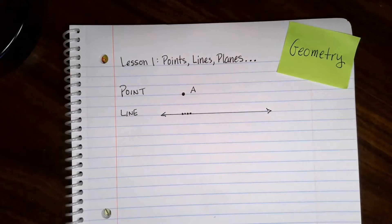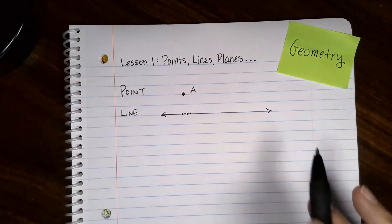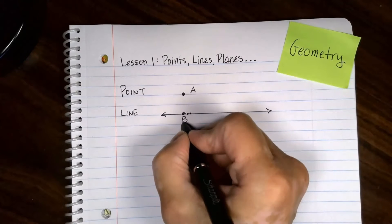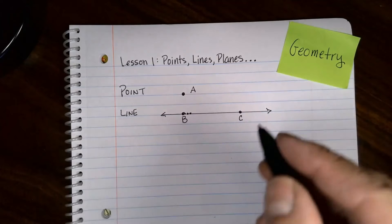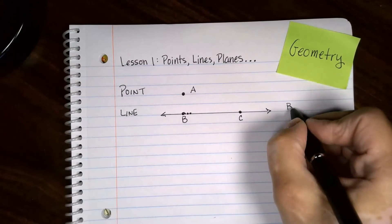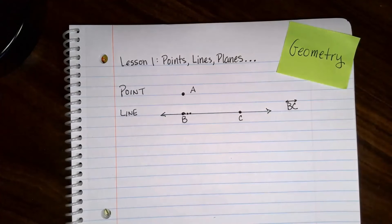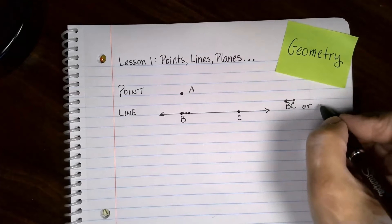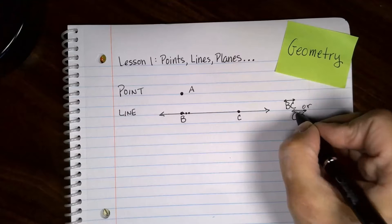To name a line we have to have a couple points. We aren't going to try to list all the points because there's infinitely many. If I grab this one and that one, then I have two points on the line and that's all I need to name it. I can name this line BC with a little icon over the top that looks like a line, or you could go with CB with the little line icon over the top.